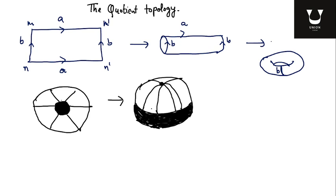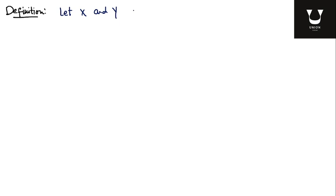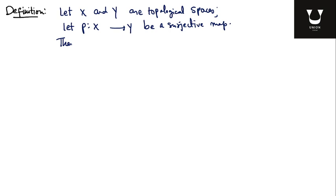If I formalize these two constructions, that involves the idea of quotient topology. But before discussing the quotient topology, I'll introduce the quotient map. Suppose x and y are topological spaces and p is a surjective function from x to y.